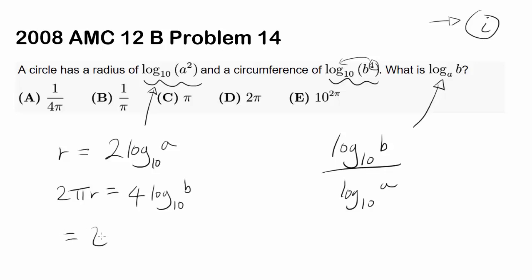So we know 2 pi times R, which is 2 pi times 2 log base 10 of A, which is 4 pi times log base 10 of A, is equal to 4 times log base 10 of B. Dividing by 4 gets you log base 10 of B equals pi times log base 10 of A.